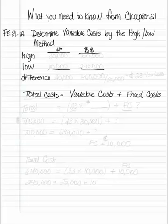The first problem we're going to look at is Practice Exercise 21-1A. You're going to look first at the number of units to figure out the highest number of units that were produced. You see that 30,000 were produced in March at a cost of $700,000.